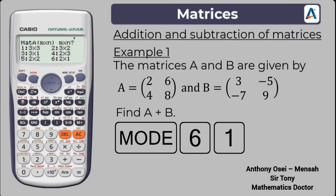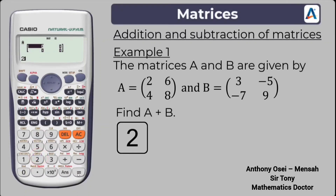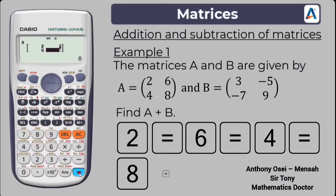There are six different matrix type options — 2x2, 3x3, 3x1, 2x1, and so on. Since matrix A is a 2 by 2 square matrix, choose option number five for 2x2. It means two rows and two columns. The calculator displays the matrix boxes. Input matrix A: press 2, equals, 6, equals, then 4, equals, 8, equals.